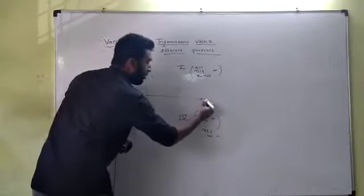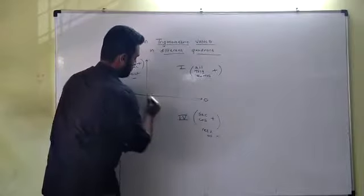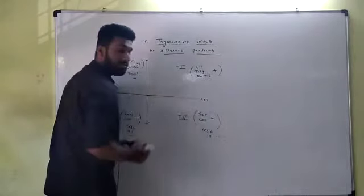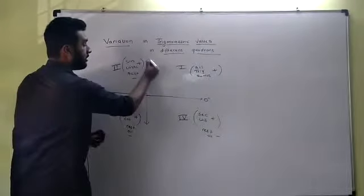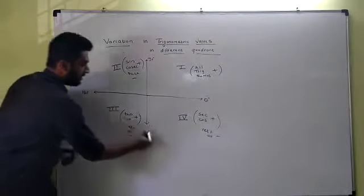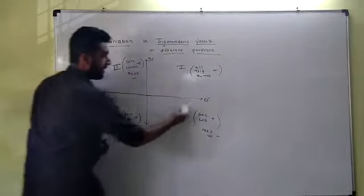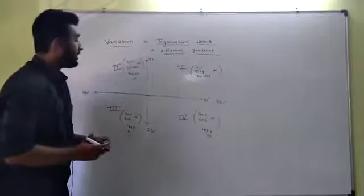I'll always start measuring my angle from this line. Starting from this line, I'll start measuring my angle. The starting point will be 0 degrees. Now this will be 90 degrees. This is 180. This is 270. And again, if I come back here, this will be 360 degrees.